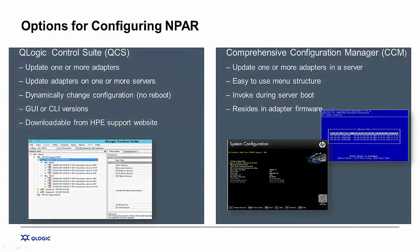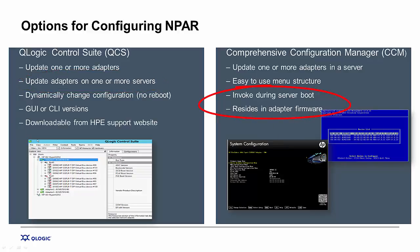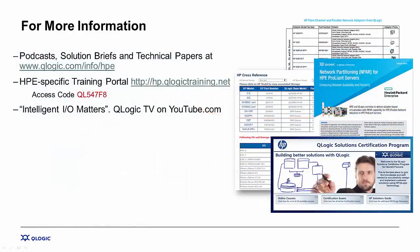So how do you enable N-PAR functionality and manage these adapters? There are two methods. First, you can use the QLogic Control Suite, or QCS, utility from QLogic. Or you can use the Comprehensive Configuration Management, or CCM, utility that's part of the adapter BIOS and enabled during the server boot process. Both QCS and the adapter firmware can be downloaded from HPE's support website, and both utilities can perform all the management functions for these HPE Flexible Network Adapters from QLogic. The key difference is that QCS is a single pane of glass management utility that works across multiple servers, whereas CCM works on each individual server one at a time.